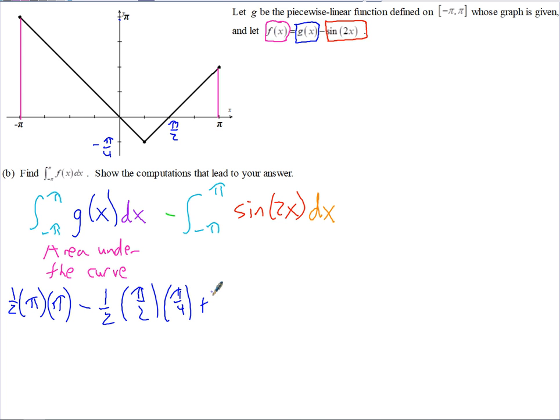And then plus our last triangle here, 1/2, the base is π/2, and the height is also π/2. So we got π²/2 minus π²/16 plus π²/8. So just combine those a little bit by getting a common denominator. But let's work on the other integral here.